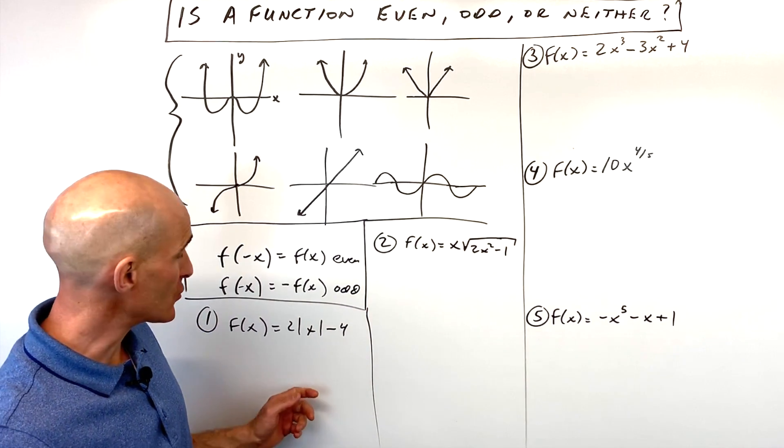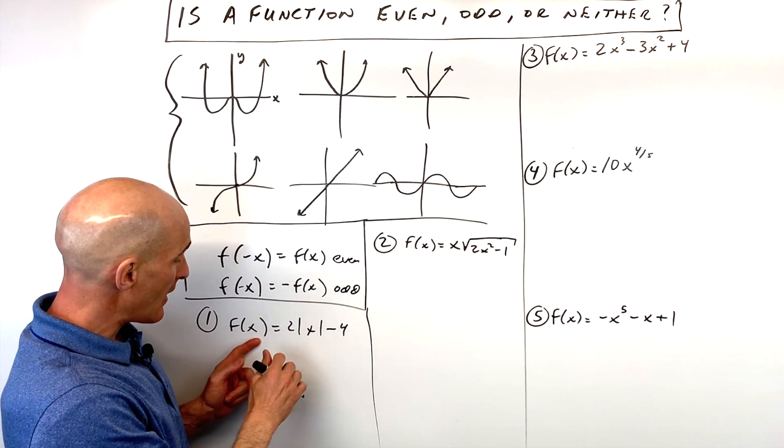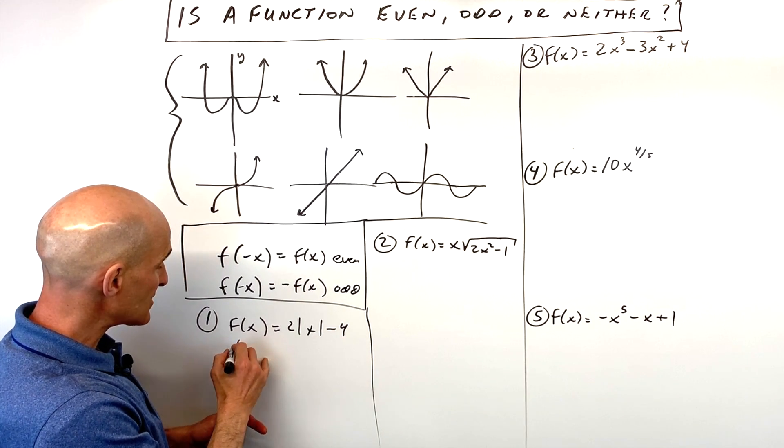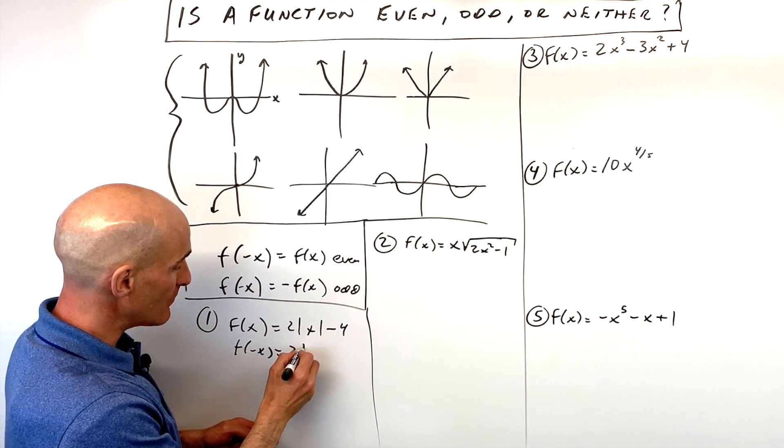These are some typical ones that you'll see in your class. For number one, f(x) equals 2 times the absolute value of x minus 4. So our test is we're going to put negative x in in place of x.